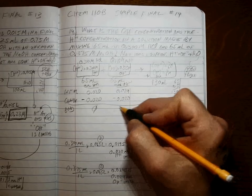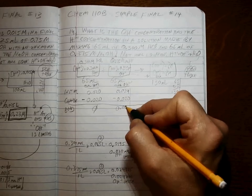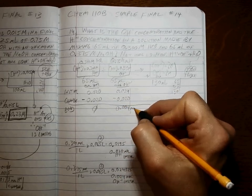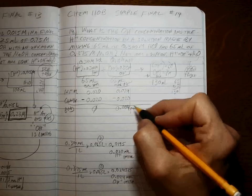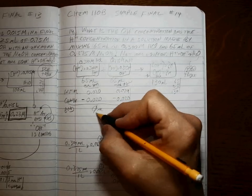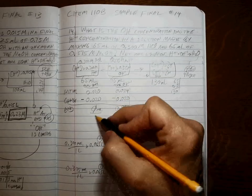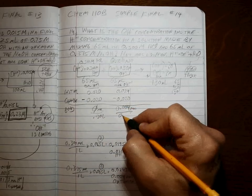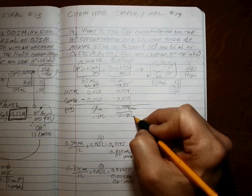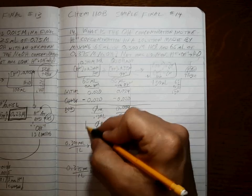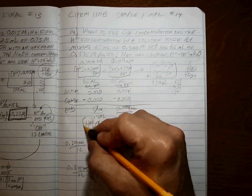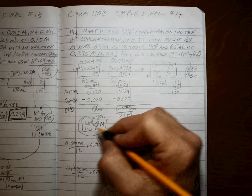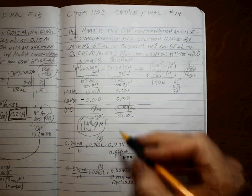which means H-plus is our limiting reagent, and it all runs out. When we do this calculation to get the moles of hydroxide left at the end and then divide by the total volume, we get 0 molar H-plus. It's all used up.